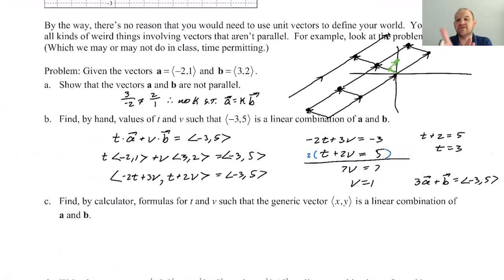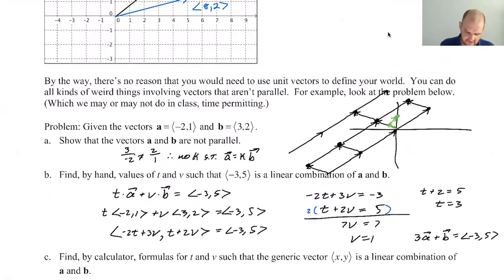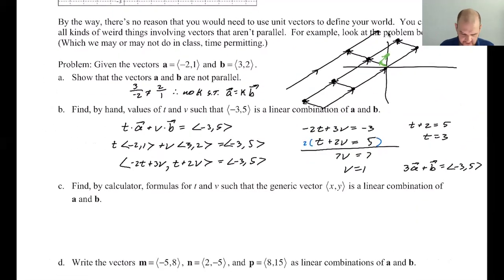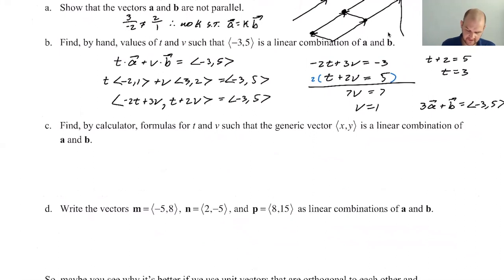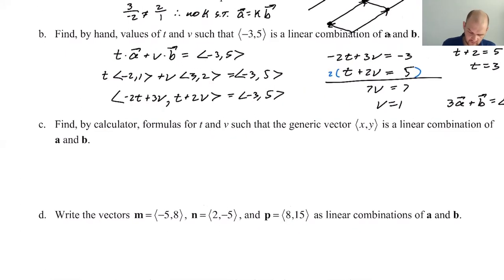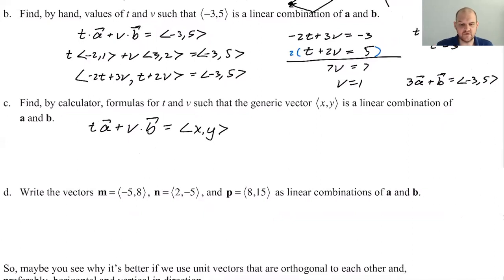So that means that if I do 3A plus B, it will give me negative 3, 5. So that's how I end up at the point negative 3, 5, following this grid of parallelograms. So I take vector A. I use it three times. So I start at 0, 0, and I use this three times, which takes me to negative 6, 3. And then from negative 6, 3, I use B once, which takes me to negative 3, 5, which is where I want to go. We can do that for every point in the plane, which is insane. As long as they're not parallel, you can create this grid of parallelograms.